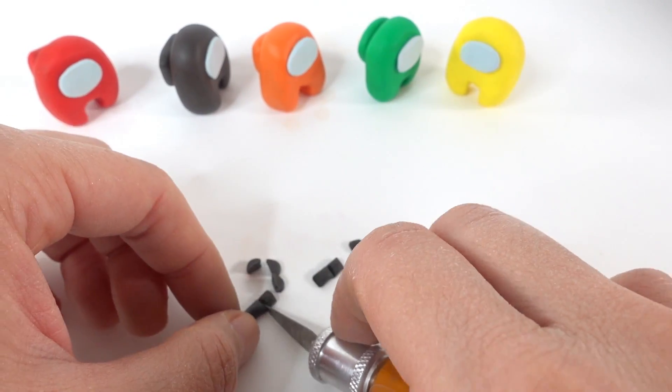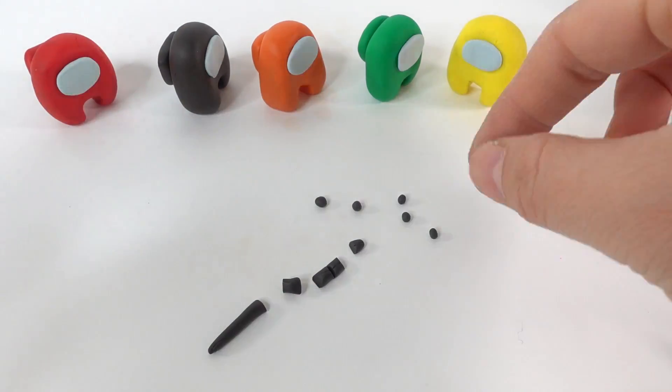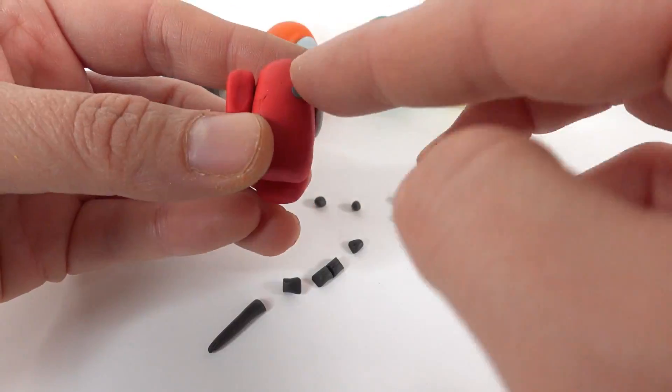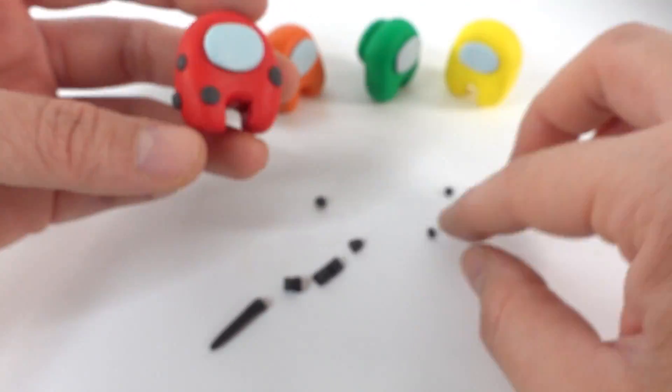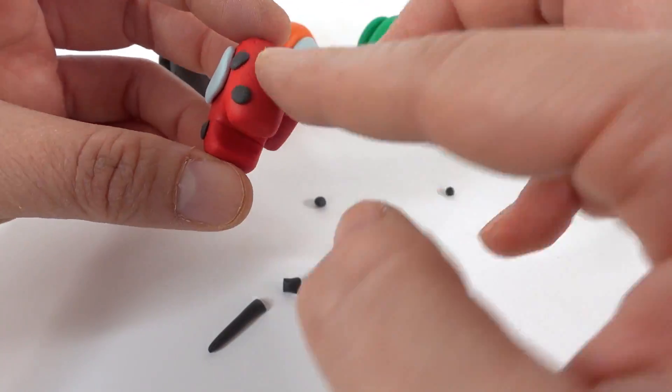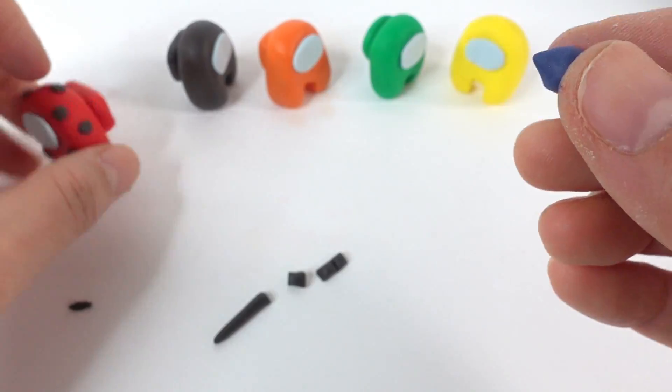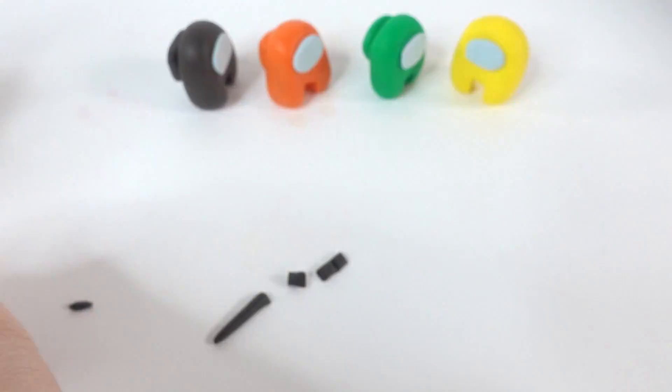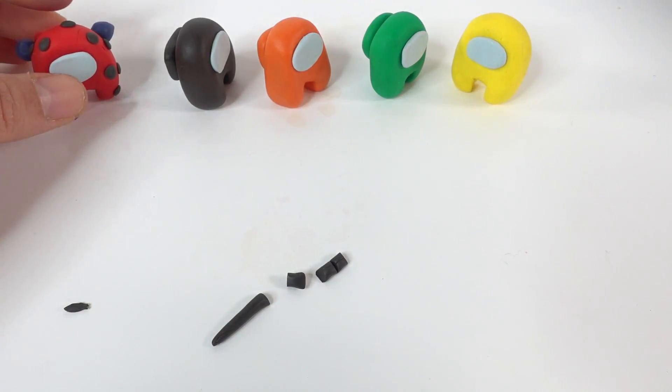Now for the final details. For Ladybug, we're going to add some spots. We're going to start by making little balls in black. Then we're going to flatten them and add to our figure. And we're also going to add two little pigtails. There we go. That's super cute.